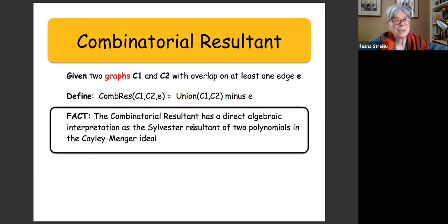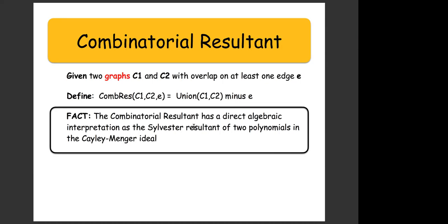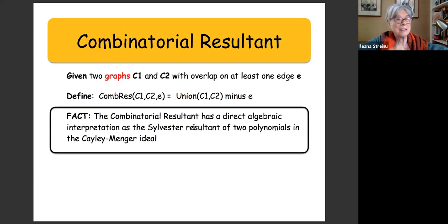A question from the audience: Are you asking anything other than overlap on one edge, like do all edges have to agree? Not yet — so far I'm just defining it. I'll give conditions under which something interesting happens. Think of two polynomials with arbitrary numbers of variables; you select a common variable and eliminate it, putting all other variables into the coefficients and taking the determinant to get a polynomial without that variable.